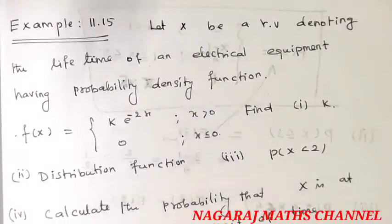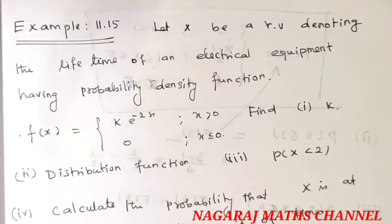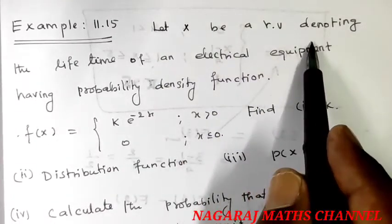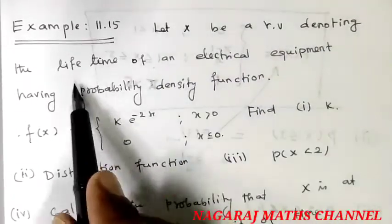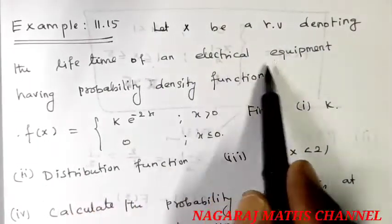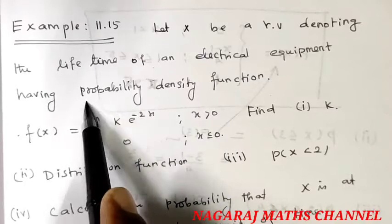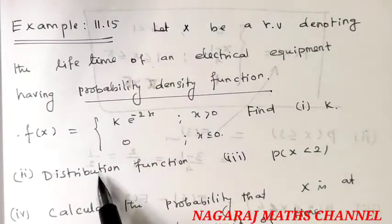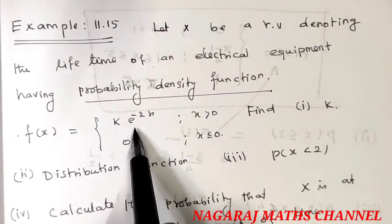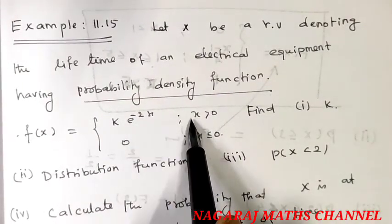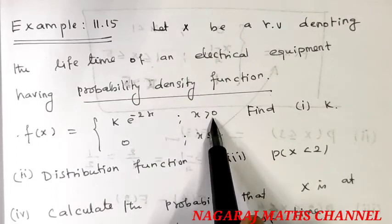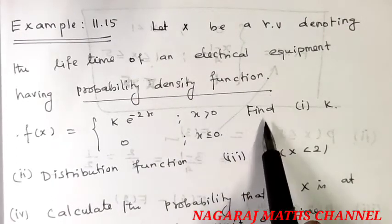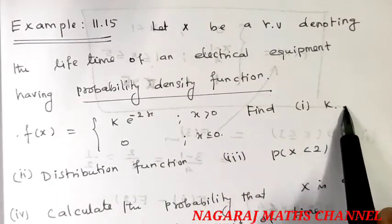Hi students, welcome to my channel. This is example 15. Let x be a random variable denoting the lifetime of electrical equipment having the probability density function: f of x equals k times e to the power of minus 2x for x greater than 0, and 0 for x equal to 0. Find k, where k is not equal to 0.